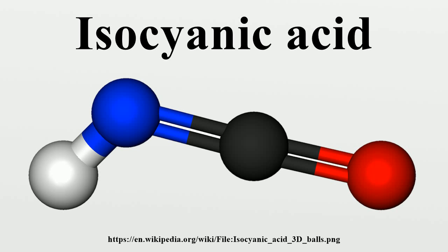Isocyanic acid is the simplest stable chemical compound that contains carbon, hydrogen, nitrogen, and oxygen — the four most commonly found elements in organic chemistry and biology.